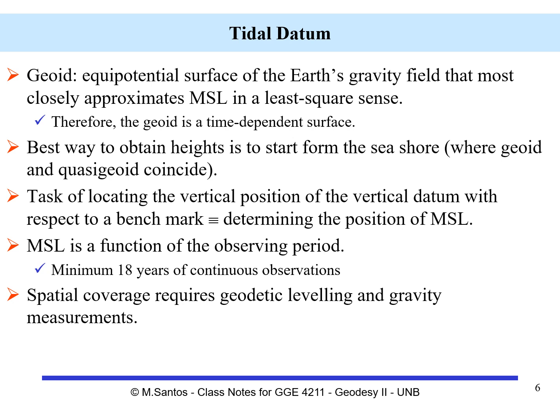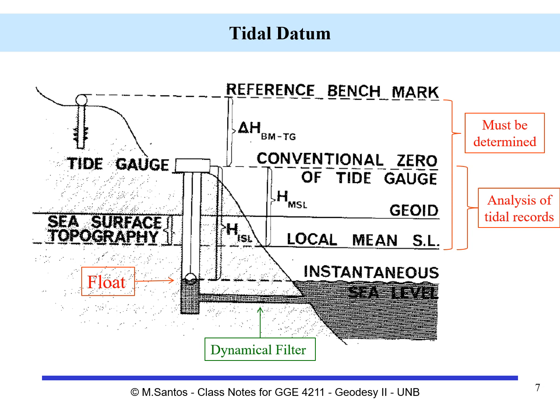Mean sea level will be a function of the observing period, and we work with a minimum of 18 years of continuous observations to account for the different tidal contributions. The spatial coverage — taking the orthometric heights of the benchmark close to the tide gauge and propagating it into the interior — requires geodetic leveling and gravity measurements. Let us look at a scheme of a tide gauge to appreciate all the elements contained in the establishment of a tidal datum.